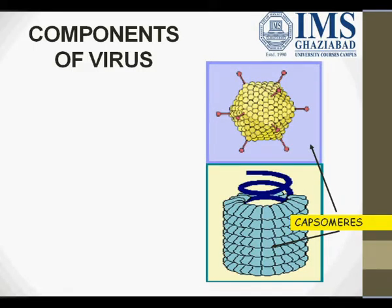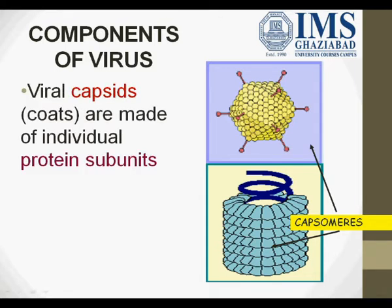Now we study the components of viruses in detail. First, we will discuss the capsid. Viruses can have different capsid structures — one is a hexagonal or icosahedral ball-like structure with some spikes, and another is a tubular helical-like structure. The outermost units are known as capsomeres. The capsid is composed of these capsomeres, which are the actual protein subunits. So the viral capsid is composed of protein subunits known as capsomeres.